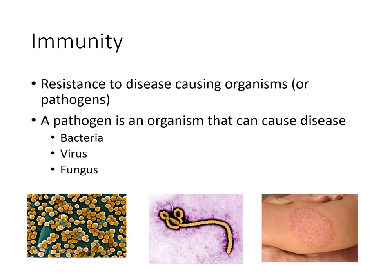What is immunity? Basically, immunity is the resistance to disease-causing organisms, generally referred to as pathogens. There are different types of pathogens — bacteria, viruses, fungi — these are the common types that could cause illnesses in the body. Our immune system's job is to prevent these pathogens from causing disease by killing them.